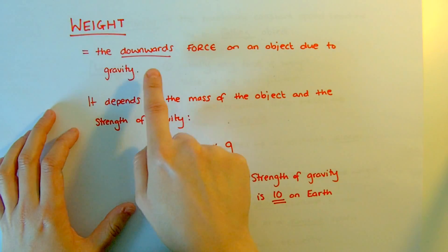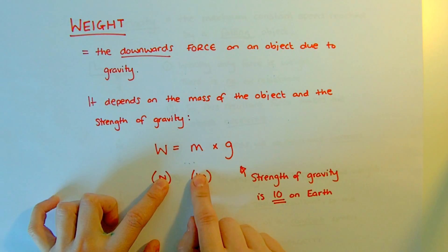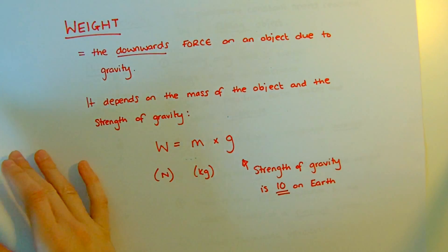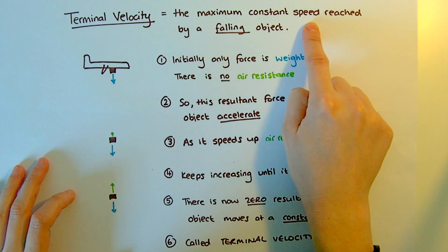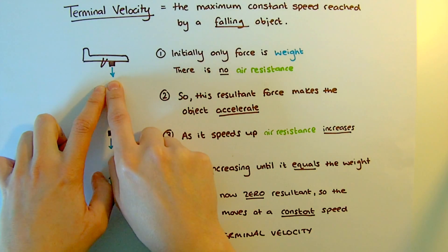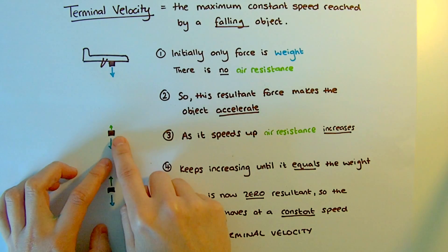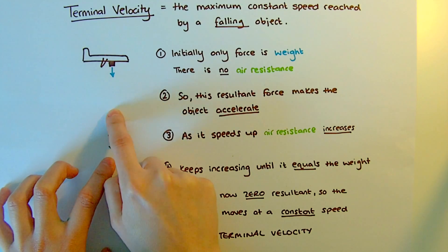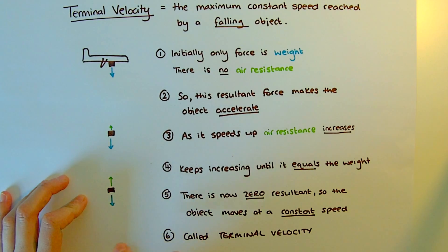Weight: it's the downwards force on an object because of gravity. It's a force, so it's measured in newtons. It depends on the mass of the object — the amount of kilograms — and the strength of gravity. Remember, gravity on Earth is 10. Terminal velocity: when an object falls through the air or a liquid, it will reach a maximum constant speed where it won't go any faster. When first dropped, the only force is weight and there is no air resistance, so it accelerates downward. As it speeds up, it hits into the air and air resistance starts to increase. The air resistance keeps increasing until it equals the weight — we now have balanced forces, zero resultant, so the object moves at a constant speed, which we call terminal velocity.